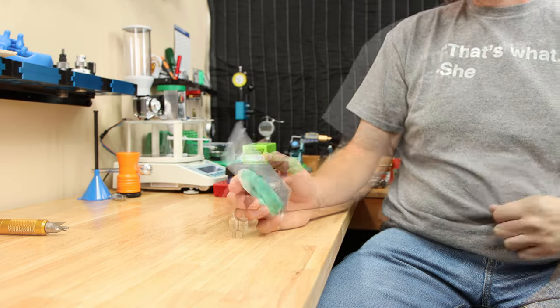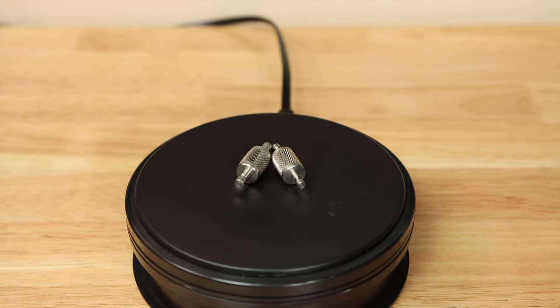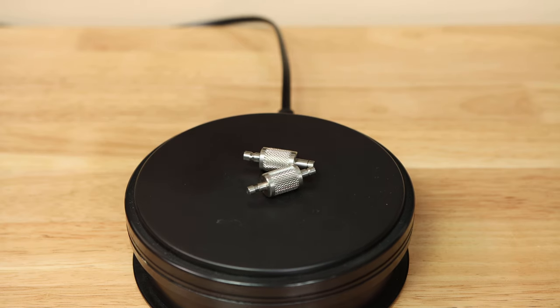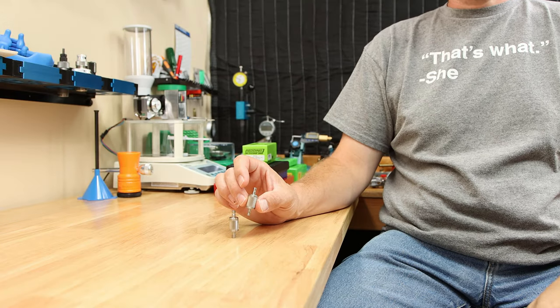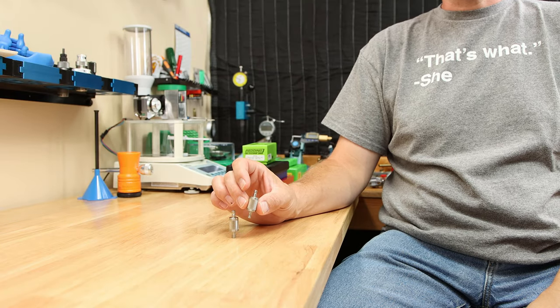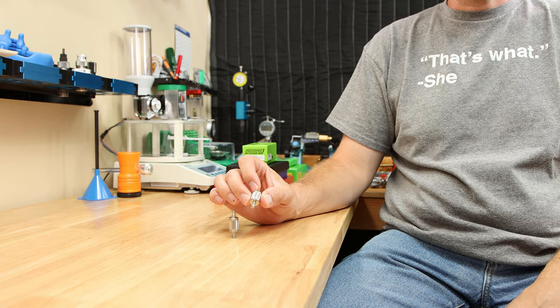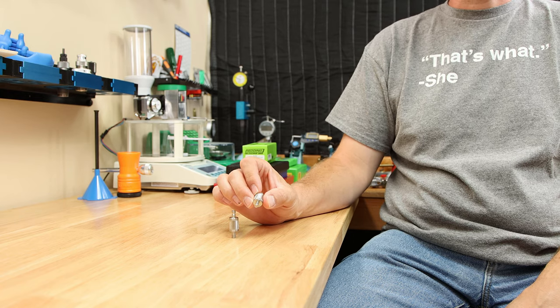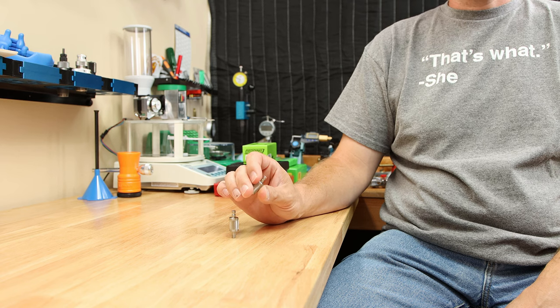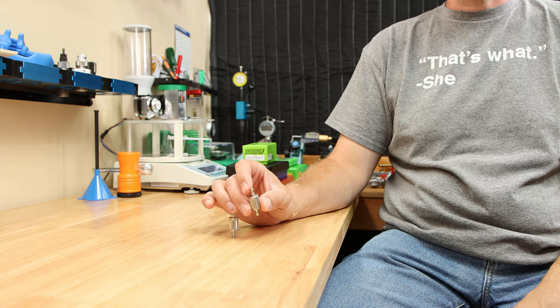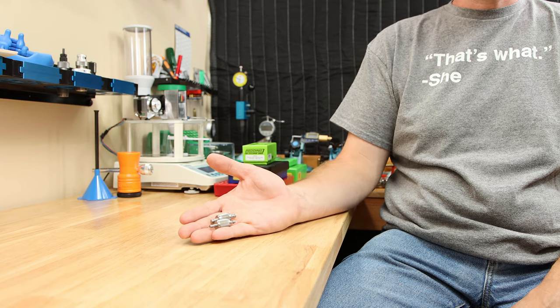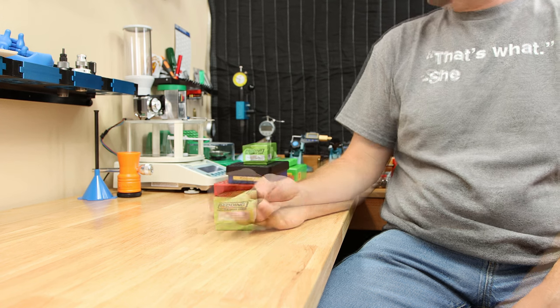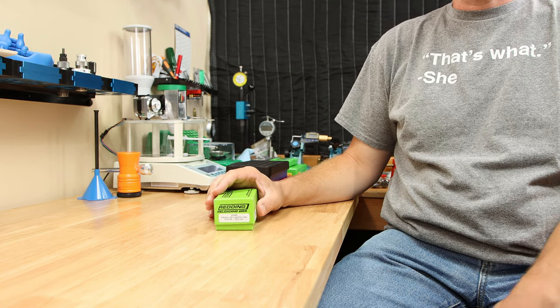The next tool I want to cover are these primer pocket swage gauges from Ballistic Tools. These tools run around $13 a piece right now. They're essentially go, no-go gauges for primer pockets. In case you're not aware, sometimes a failure mechanism of brass is that after so many firings, the primer pockets will get loose, and they won't be able to hold a primer anymore. If you'd like to be able to measure these, one side should clearly go, the other side should not. They have them for both large and small, and I think they're far worth the $13 for as much as I've used them.